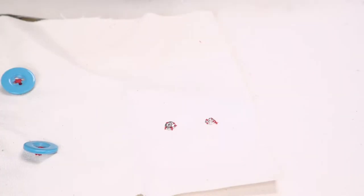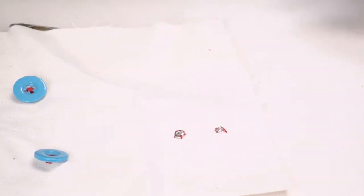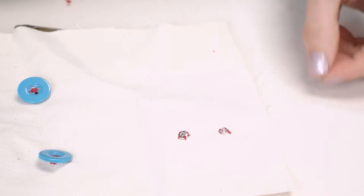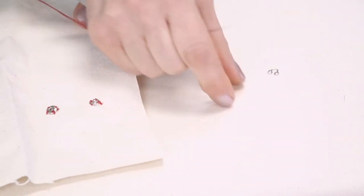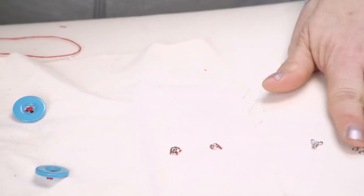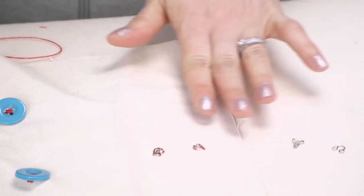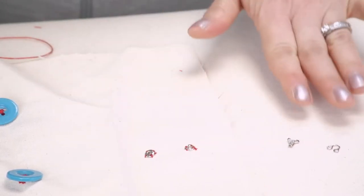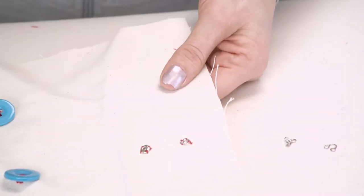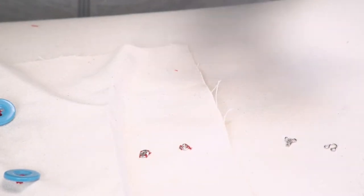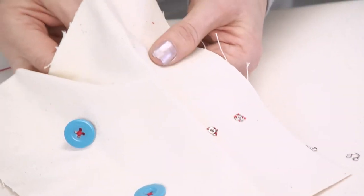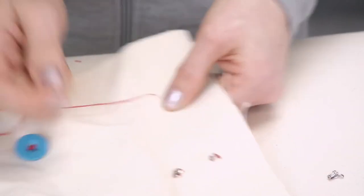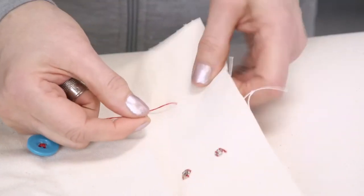And we're going to move on to hook and eye. We use a lot of hook and eyes on dresses. Once again we just want a nice neat application. The hook and eye does not have enough surface space for us to hide the knot. Generally when we do a hook and eye we will hide our knot underneath the nearest seam or fold. So I'm actually just going to come up from the bottom for the hook and eye. And we're going to apply the hook first.